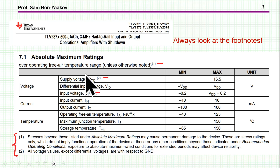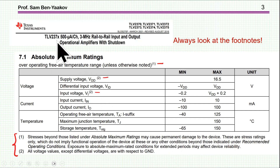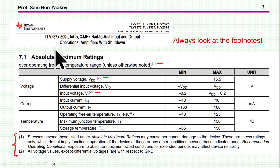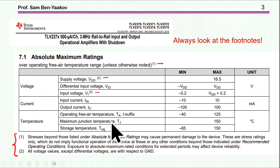Here is an example of an Absolute Maximum Rating table. This is for an operational amplifier by Texas Instruments, the TLV237 family. These are the parameters. Let me start off with a suggestion: always look at the footnotes. All these tables have footnotes, and as it turns out, these footnotes are very, very important. This particular table is divided into voltage, current, and temperature sections.